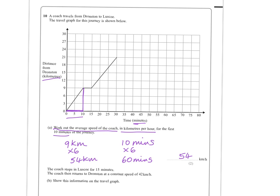Then it says the coach stops in Luscoe for 15 minutes. The coach then returns to Dronsden at a constant speed of 42 kilometres an hour. Well, we can definitely sort out this part first. So it stops for 15 minutes. Therefore, it's not travelling any distance at all. So it's just standing still for 15 minutes. And we can show 5, 10, there we go, 15 minutes there.